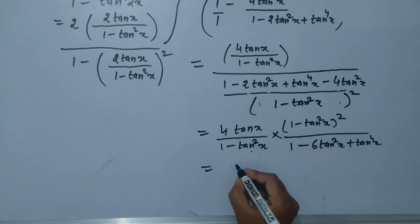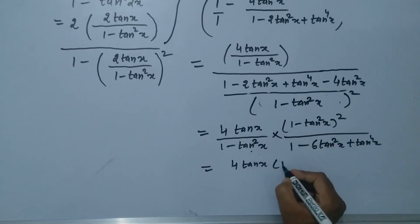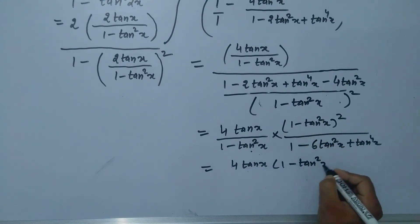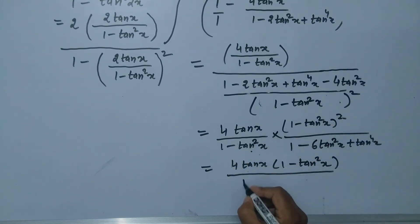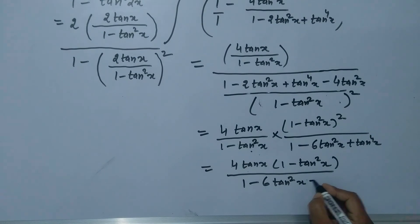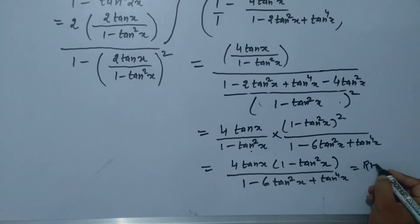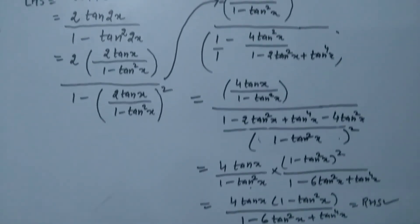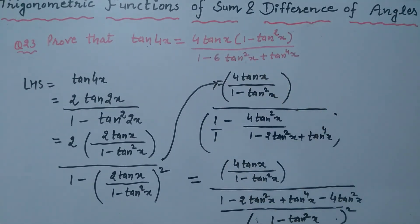What we are left with is 4 tan x (1 - tan²x) divided by (1 - 6 tan²x + tan⁴x), which is exactly the right hand side of the question. Hence proved.